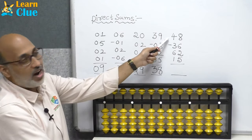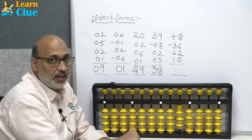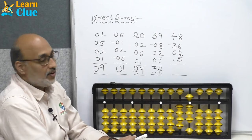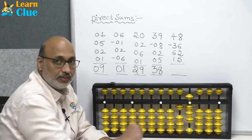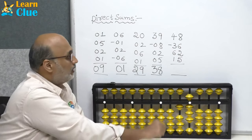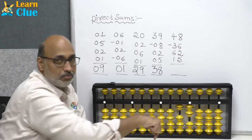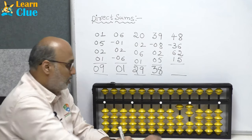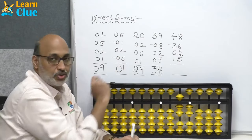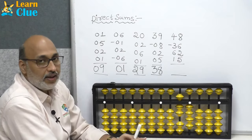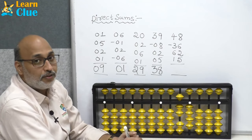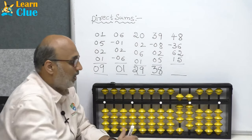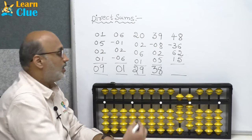Next problem: the first number is 48. Place 40 in tens place and 8 in ones place — 8 is a butterfly number. They are asking minus 36: minus 30 first (10, 20, 30), then minus 6 (minus 5, minus 1). Now plus 62: plus 60 first (plus 50, plus 10), then plus 2 in ones place. Then add 15 more: 10 in tens place and 5 in ones place. The answer is 89.